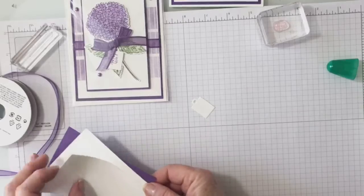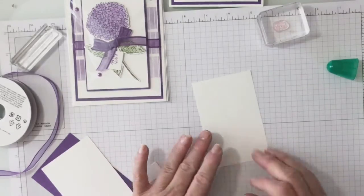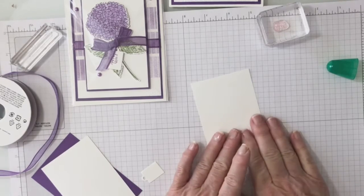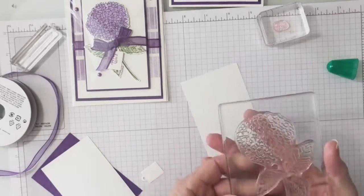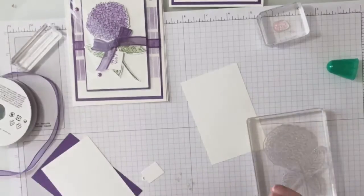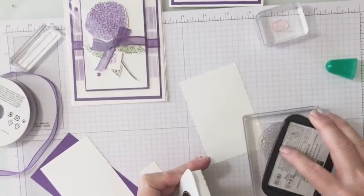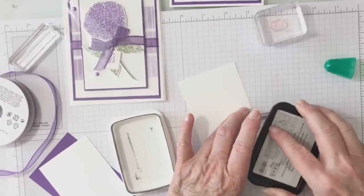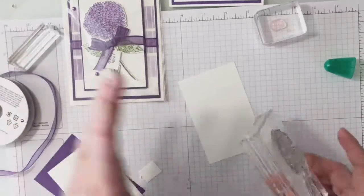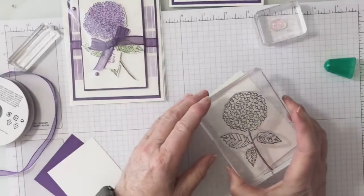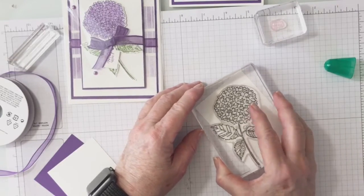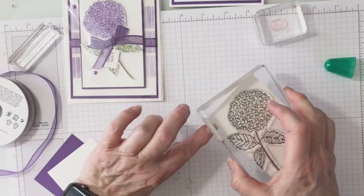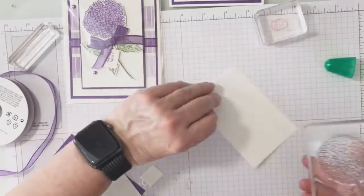So then I'm going to come back on one of these pieces of basic white. Your instructions say whisper white, that shows you how long ago I did this. I'm going to stamp my hydrangea in memento. This is one of those big stamps, so you want to do ink to stamp rather than stamp to ink so that you can be sure you have it all covered. I'm just going to stamp that right on there. Oops, I went off the edge, didn't I? Okay, we're going to turn it over and try it again.